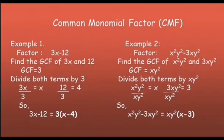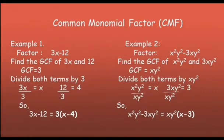So for x squared and x, we get x, then affix y squared. Now divide both terms by their GCF, which is xy squared. So x squared y squared divided by xy squared: we cancel y squared, and subtract the exponent of x — x to the power 2 minus 1 — giving us x.